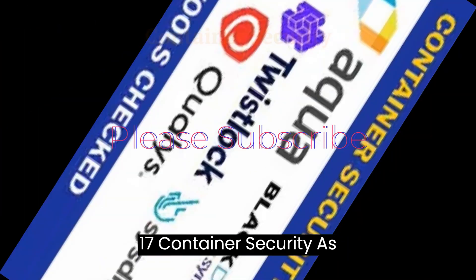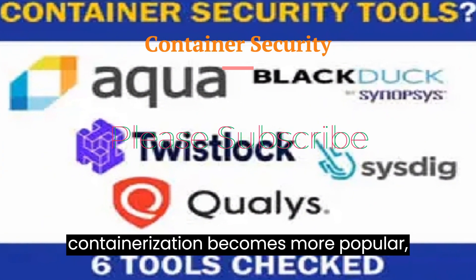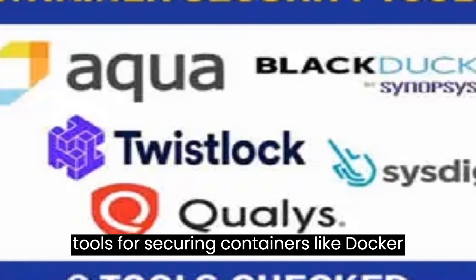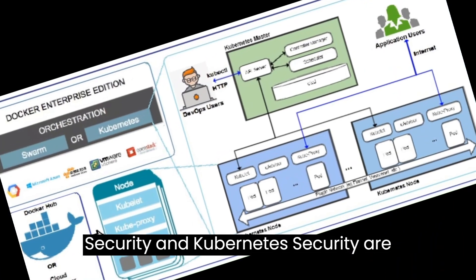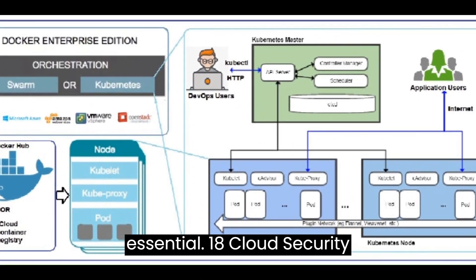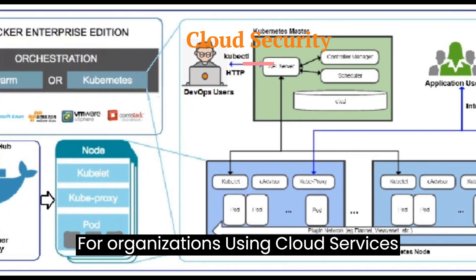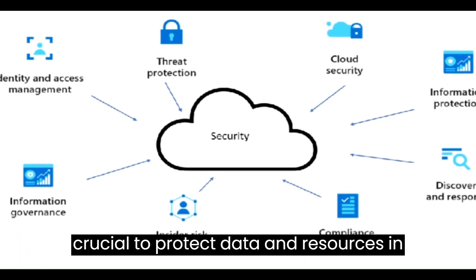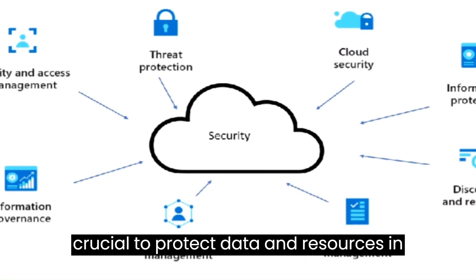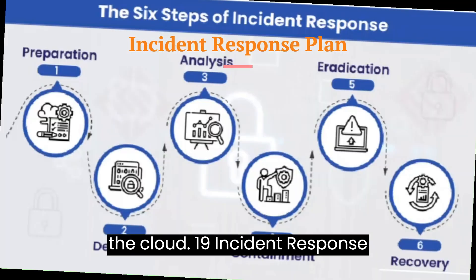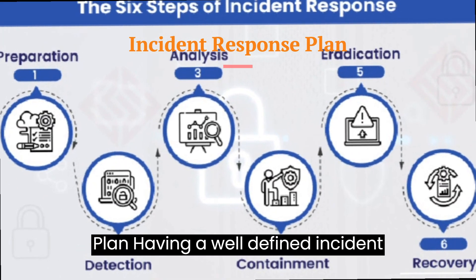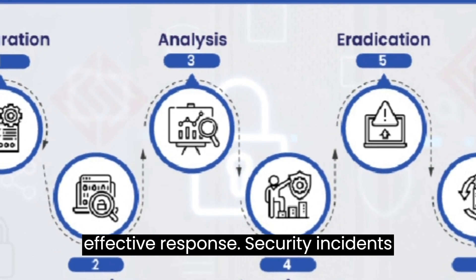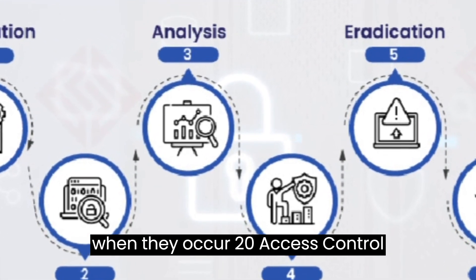17. Container security. As containerization becomes more popular, tools for securing containers, like Docker security and Kubernetes security, are essential. 18. Cloud security. For organizations using cloud services, cloud security tools and practices are crucial to protect data and resources in the cloud. 19. Incident response plan. Having a well-defined incident response plan ensures a structured and effective response to security incidents when they occur.